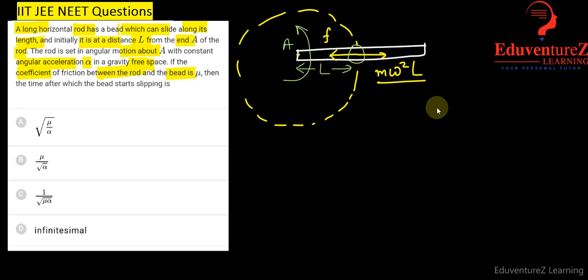If the slipping is yet to start, then the friction is balancing the centrifugal force. After this point, the bead will start slipping because due to angular acceleration omega will increase and friction will not be able to stop the bead from slipping. This is the margin condition.